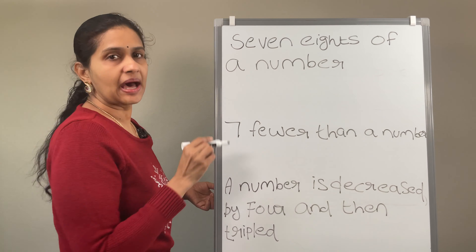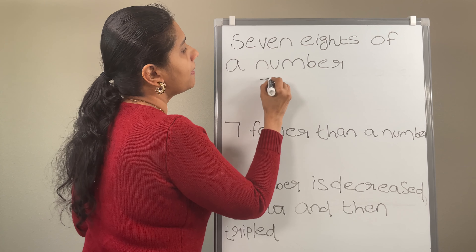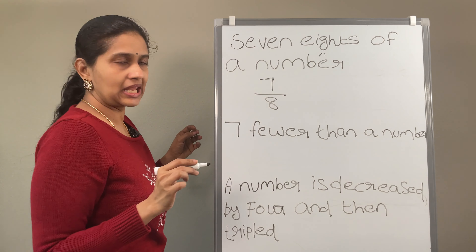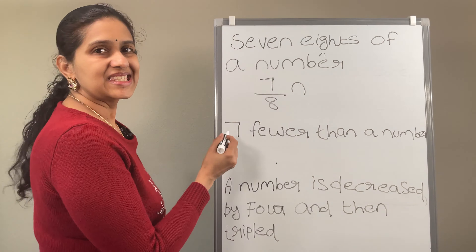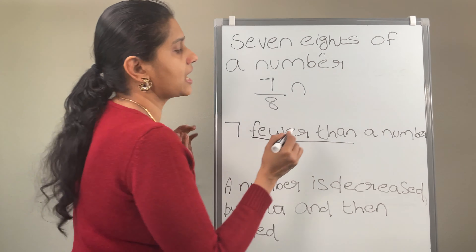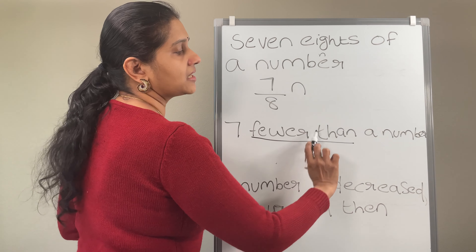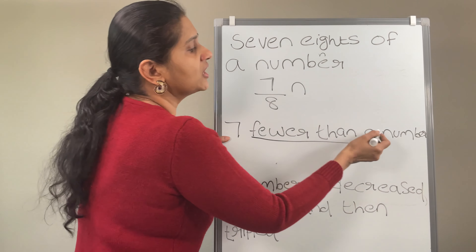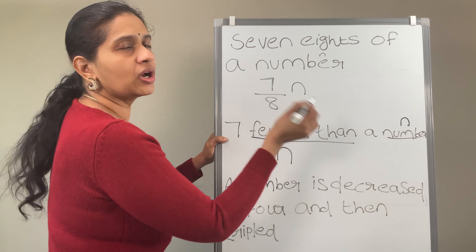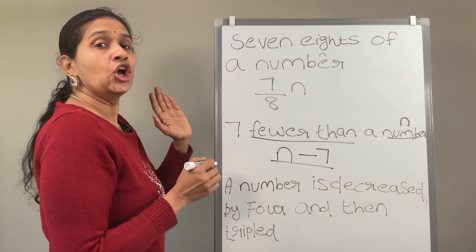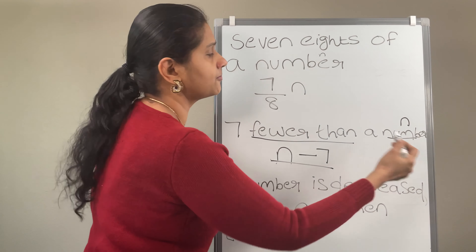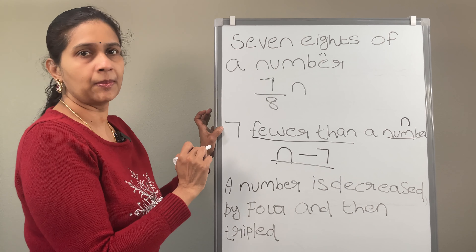7 eighths of a number — 7 eighths means 7 over 8. Consider this number as a variable n. So 7 over 8 times n. Now 7 fewer than a number, which means 7 less than a number. As I told you, fewer than or less than — if you see anything like that, the number or variable coming after 'fewer than' should come first. So consider the number as variable n. Fewer than means n should come first, then subtract, then put the 7. So n minus 7. Don't write it as 7 minus n.